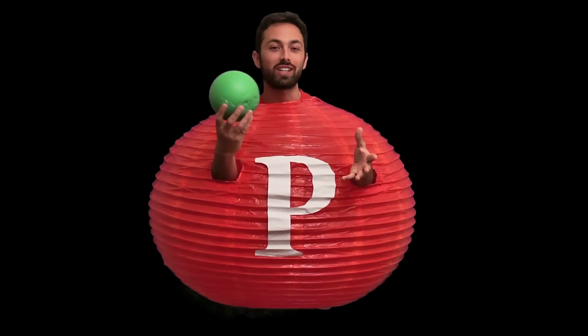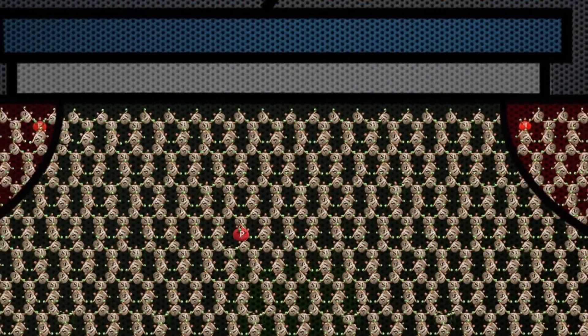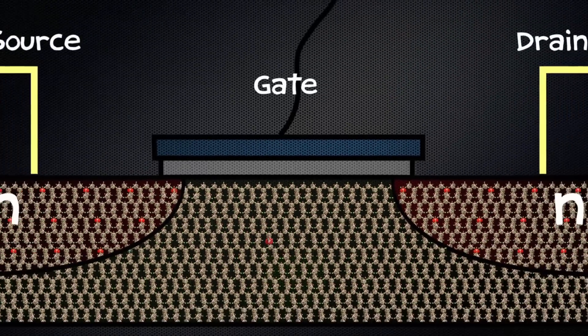But how do you actually make a qubit in practice? And how do you read and write information on it? I met up with researchers who are using the outermost electron in a phosphorus atom as a qubit. This single phosphorus atom is embedded in a silicon crystal right next to a tiny transistor.